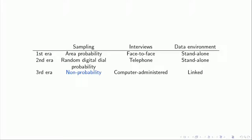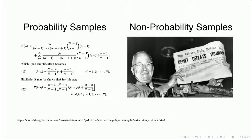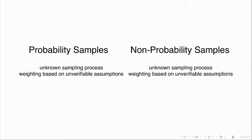Non-probability sampling is what I think will become increasingly common. The way I was trained, and many other social scientists were trained, is that there is a bright-line difference between probability samples and non-probability samples. Probability samples have nice properties — this is from the Horvitz-Thompson 1952 paper. Non-probability samples give you something like what you see on your right: President Harry Truman holding a newspaper reporting he had lost an election he had actually won. This error was attributed to bad non-probability samples.